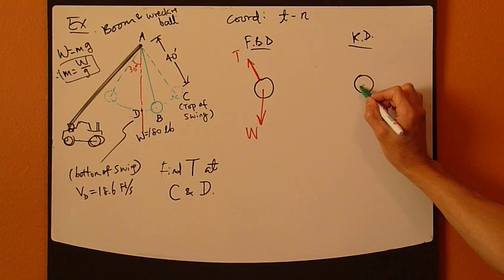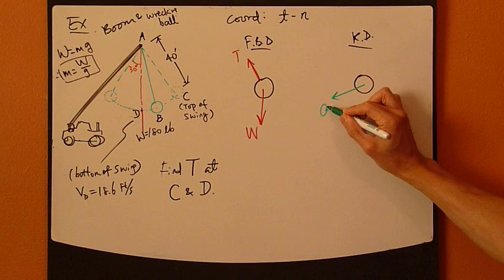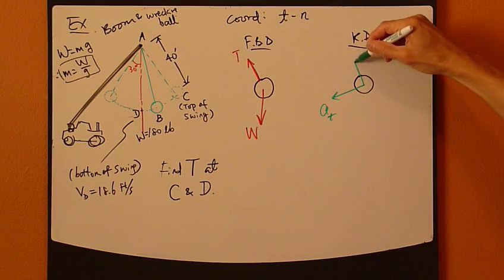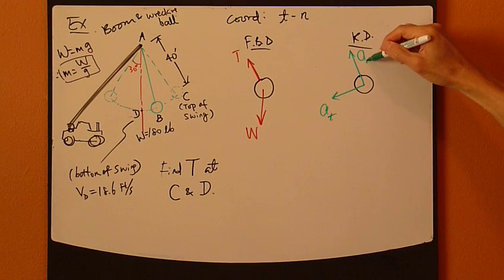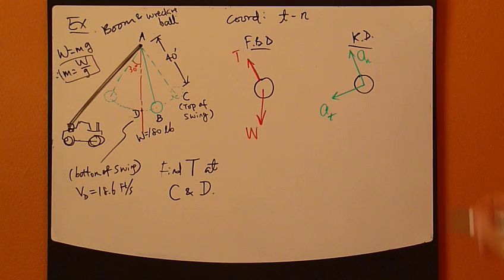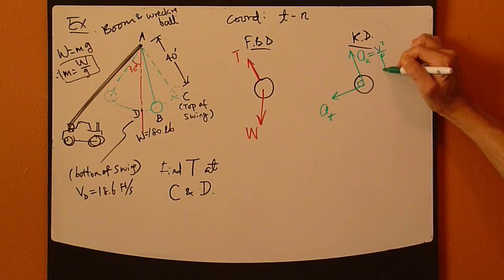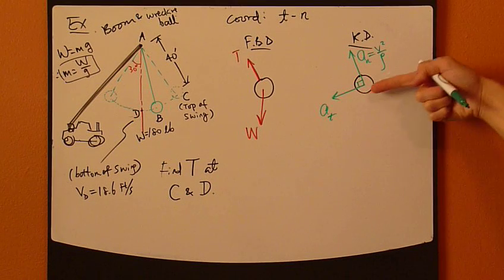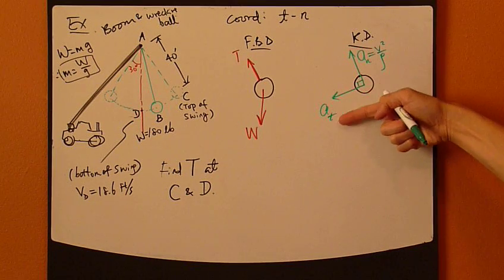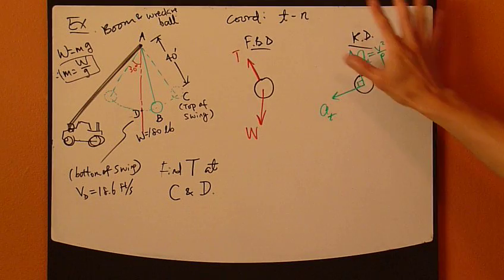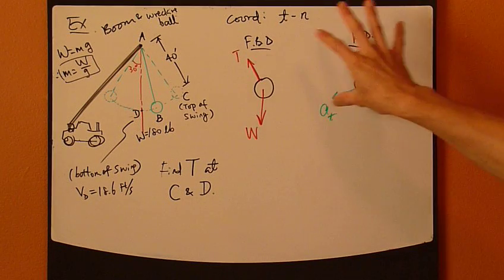So draw the kinetic diagram next to it. The acceleration vector can be decomposed in the tangent direction and normal direction. And for An, you know that from before, V equals V squared over rho, where V is in the same direction as At, tangent direction, tangent to the path.